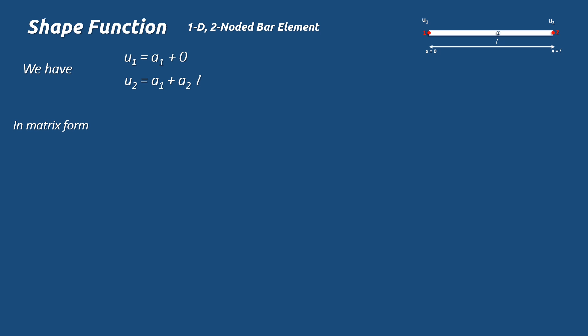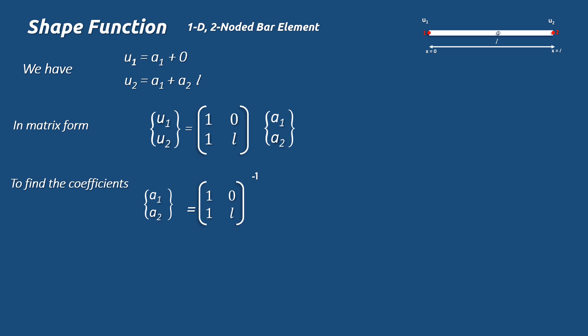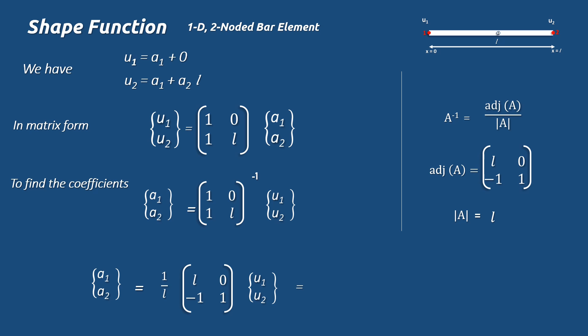In matrix form: {u1  u2} = [1 0; 1 L] · {a1  a2}. Solving for a1 and a2: {a1  a2} = [1 0; 1 L]⁻¹ · {u1  u2}. For a 2×2 matrix, the inverse is found by interchanging diagonal elements and changing signs of off-diagonal elements, divided by the determinant (L − 0 = L). So {a1  a2} = (1/L) · [L 0; −1 1] · {u1  u2}, which gives the matrix [1 0; −1/L  1/L] · {u1  u2}.